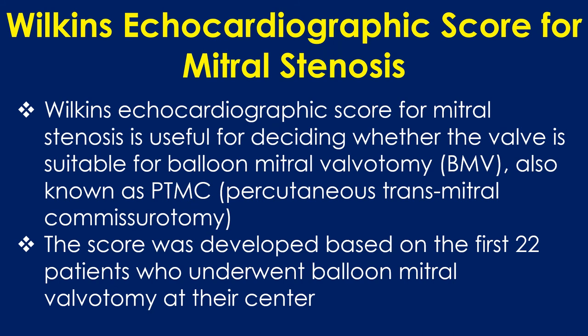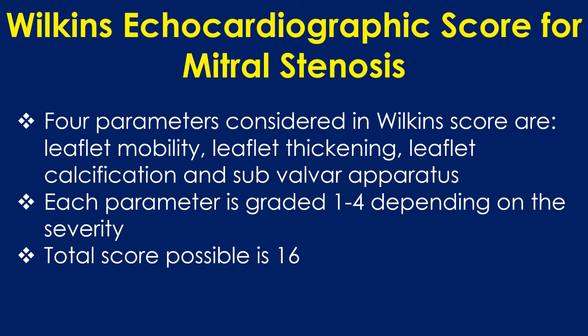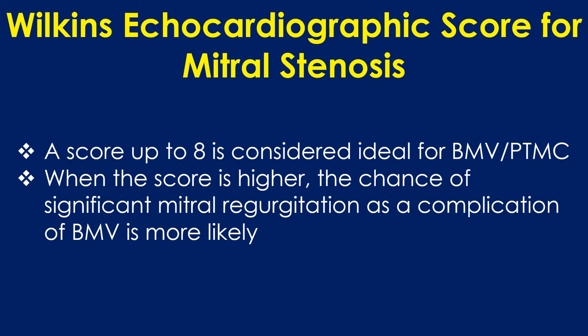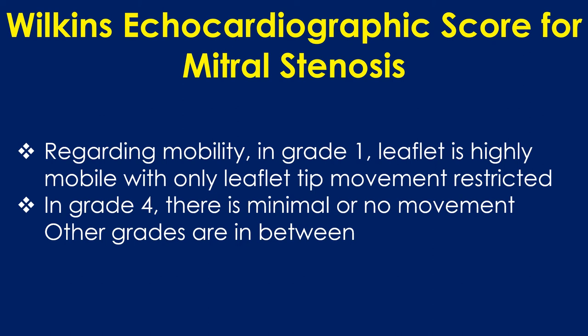The Wilkins echocardiographic score for mitral stenosis is useful for deciding whether the valve is suitable for balloon mitral valvotomy. The score was developed based on the first 22 patients who underwent balloon mitral valvotomy at their centre. The four parameters considered are leaflet mobility, leaflet thickening, leaflet calcification, and subvalvar apparatus. Each parameter is graded 1 to 4 depending on severity, giving a total possible score of 16. A score up to 8 is considered ideal for BMV. When the score is higher, the chance of significant mitral regurgitation as a complication of BMV is more likely.